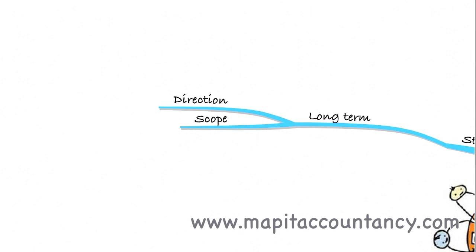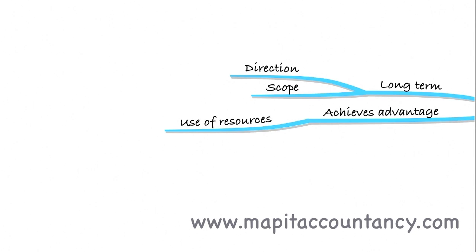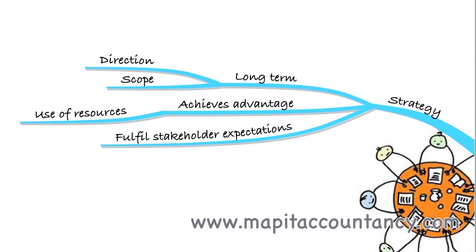When we think about long-term direction or scope, we need to think about whether we're achieving competitive advantage. The long-term direction or scope will achieve that competitive advantage and make best use of the resources available within the firm. Lastly, we need to fulfil stakeholder expectations. Strategy is therefore defined as the long-term direction or scope that achieves competitive advantage through best use of resources and fulfils stakeholder expectations.